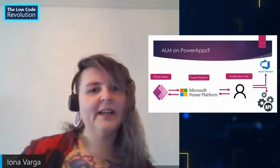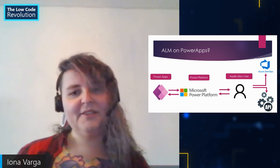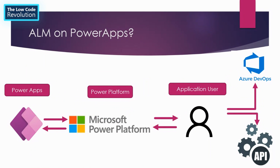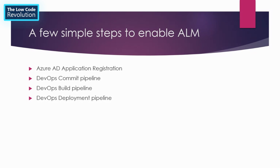No problem. I'll prepare a slide to show you. Normally when you have traditional development, you have repositories which you work in, and for low-code developers that can be quite complex — but it's quite manageable and easy to achieve. You have your Power Apps talking to your Power Platform, and inside there's an application user. The application user enables your API, and that API can be requested by Azure DevOps or basically any source. The application user is what you need in your environment to get ALM working. There are only a few simple steps: an Azure AD application registration that becomes the application user, a commit pipeline, a build pipeline, and a deploy pipeline. Those four steps are basically it.